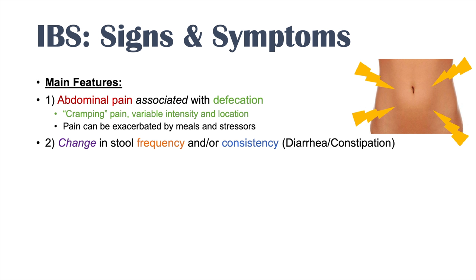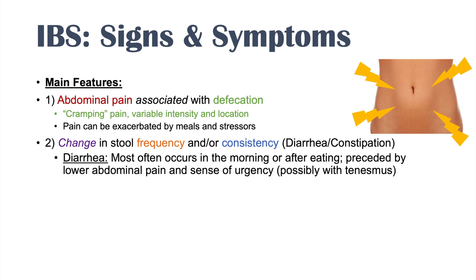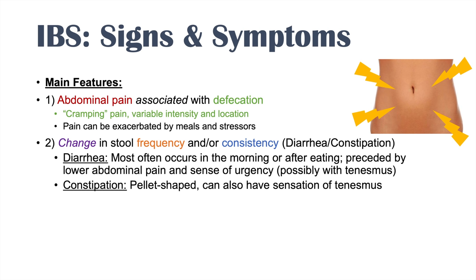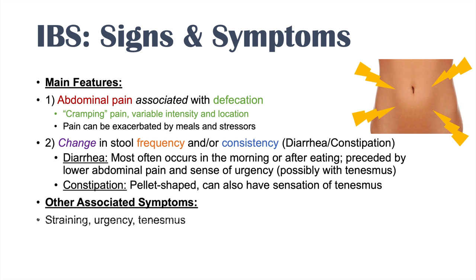With regards to the diarrhea, it most often occurs in the morning or after eating, preceded by lower abdominal pain and a sense of urgency, with a possible sensation of tenesmus or feeling of incomplete evacuation. The constipation can be significant — bowel movements can be pellet-shaped and also associated with a sensation of tenesmus. Other associated symptoms include straining, urgency, tenesmus, passage of mucus, bloating, and abdominal distention.